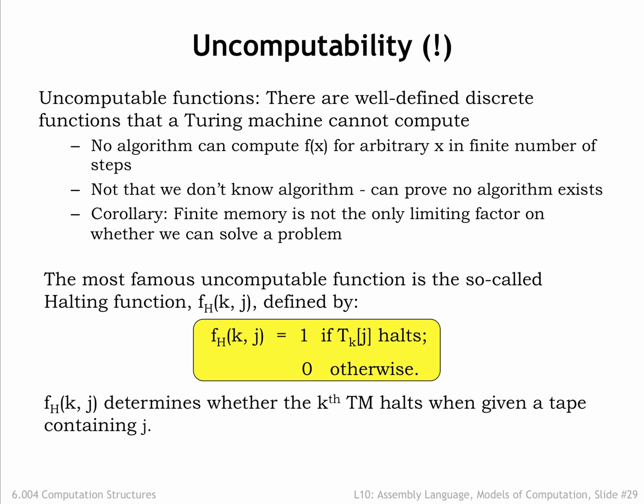The halting function tells us which outcome we'll get. Given two integer arguments, k and j, the halting function determines if the kth Turing machine halts when given a tape containing j as the input.